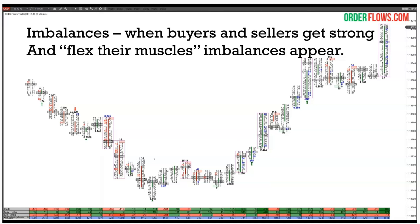One feature of the Order Flows Trader software is it highlights bars that have multiple buying imbalances as a visual reference. It's easy to look at a bar that has a rectangle around it to tell me there are multiple selling or buying imbalances in that bar. You can see as this market is going down, hitting the low, going sideways — there's a bar with two selling imbalances, three selling imbalances — then starts ticking up with multiple buying imbalances, then another bar with multiple buying imbalances. Now I'm convinced the move down is over.